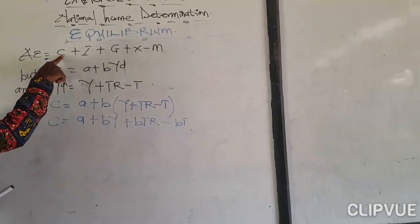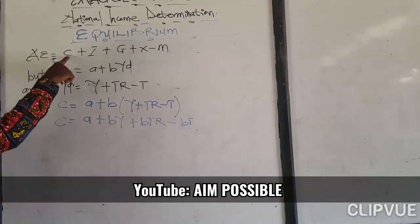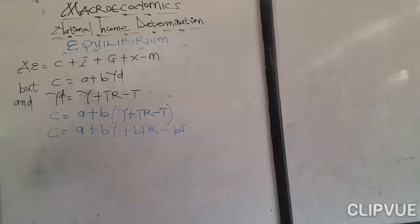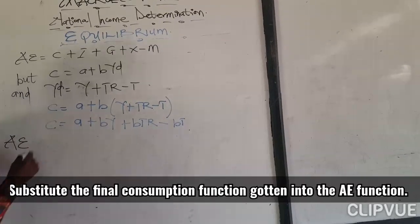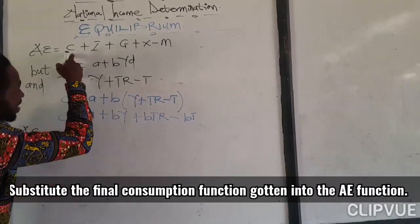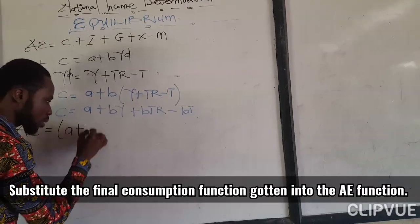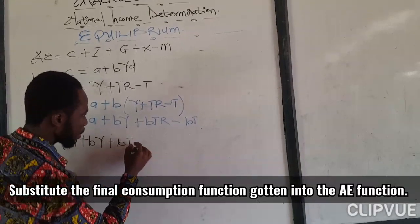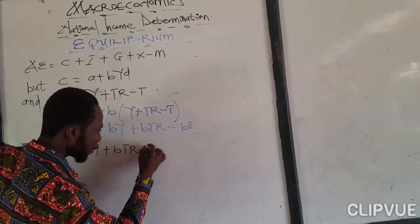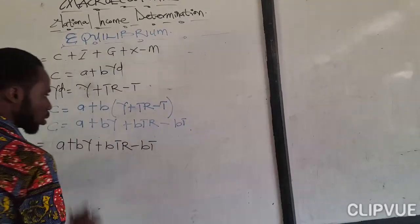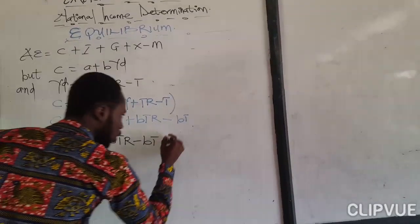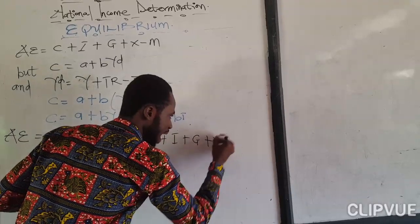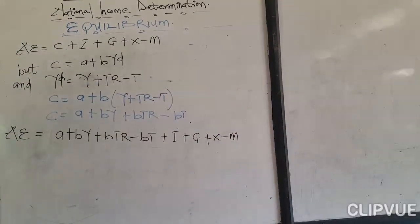So wherever we see C in the aggregate expenditure equation, we are going to substitute the whole expanded expression. Our new aggregate expenditure function is going to be A plus BY plus BTR minus BT, plus investment plus government spending plus export minus imports.